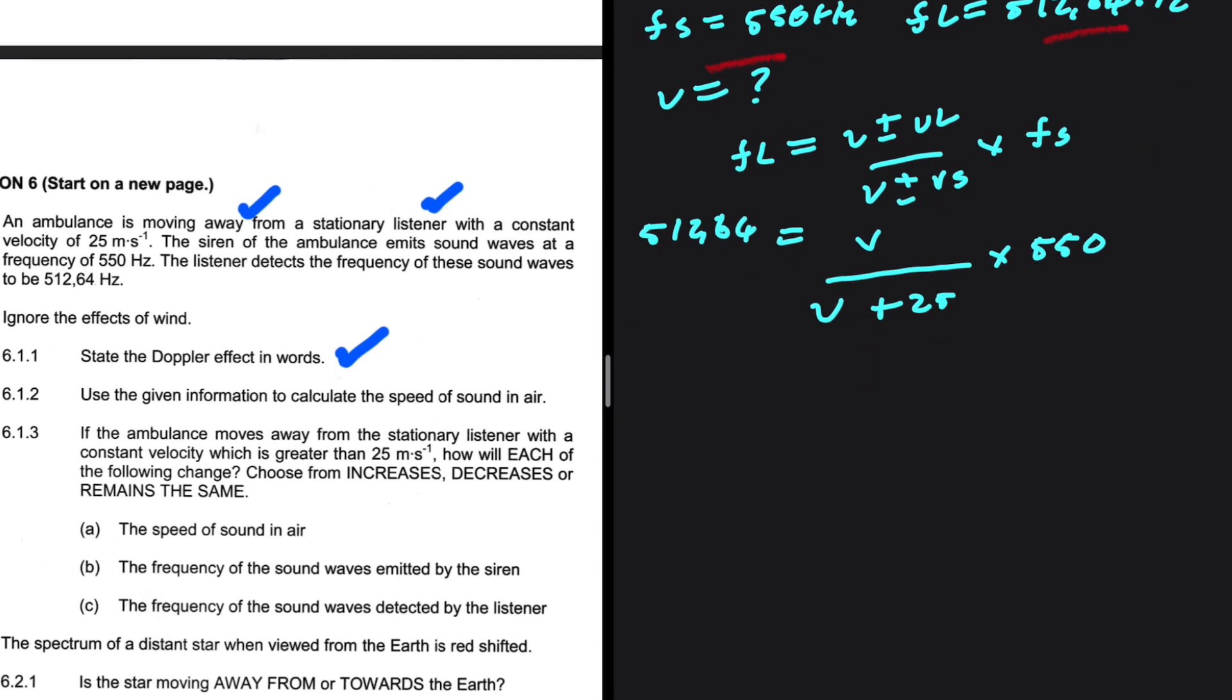So this is the method I'm going to use. I will divide both sides by 550. So 550 and 550 will cancel out on the right-hand side. And then on the left-hand side, I'm going to have 512.64 divided by 550, which is 0.9321. So I have 0.9321 being equals to V divided by V plus 25. I didn't do anything fancy here. I just divided both sides by 550.